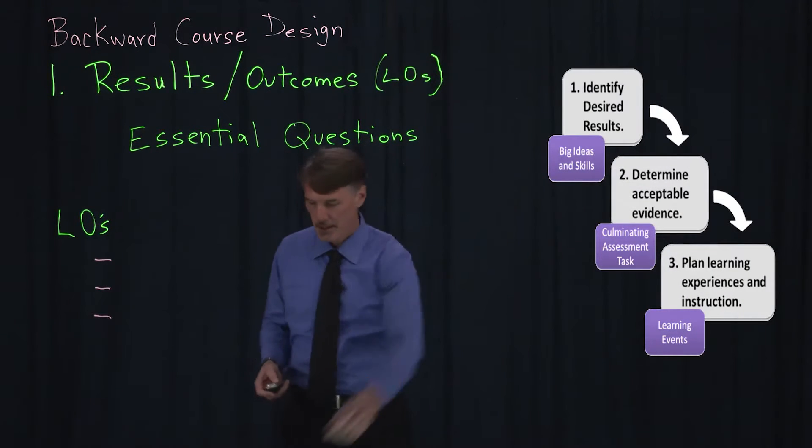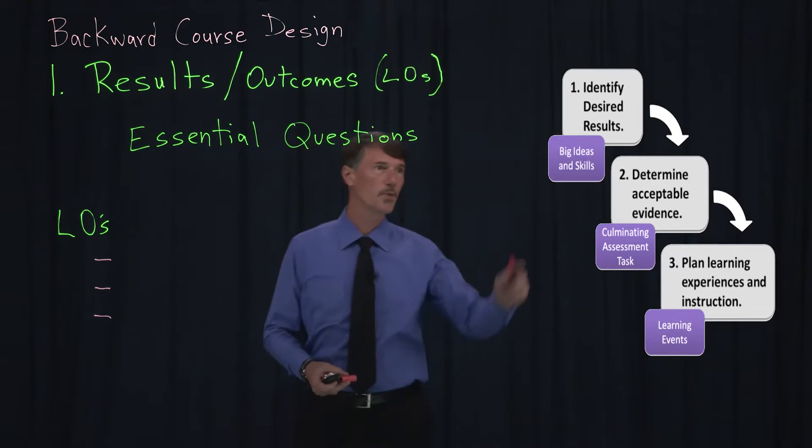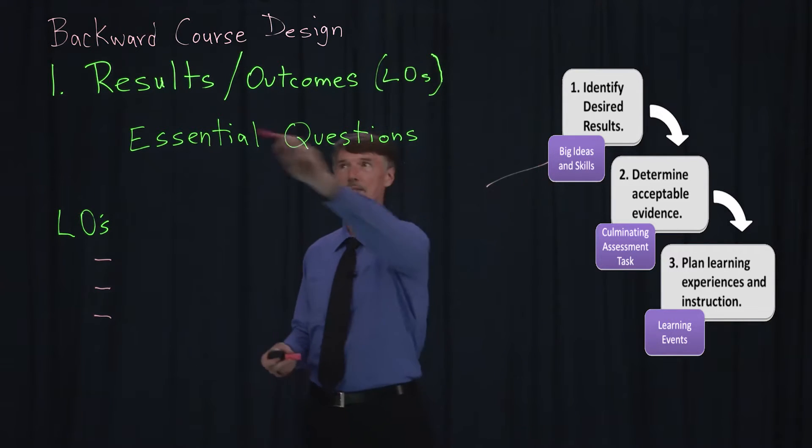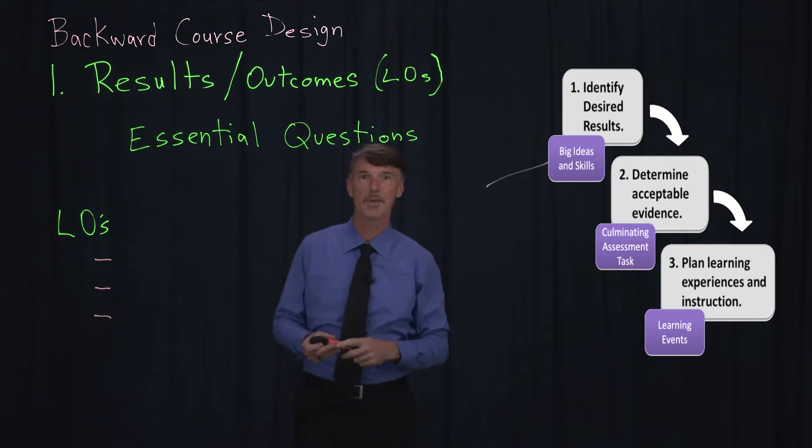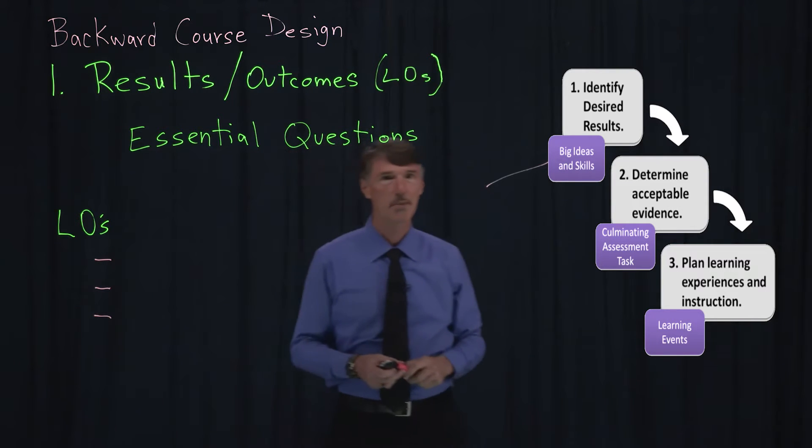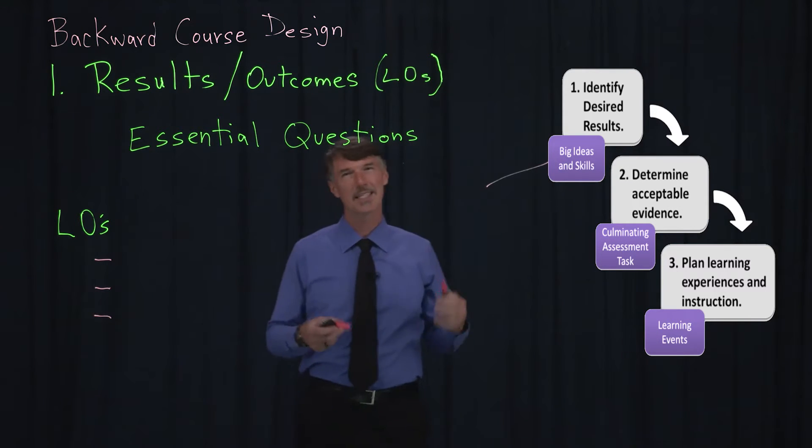So I mentioned the model. Here it is. This is the model that we're going to be seeing over and over again. And we're going to talk about step number one, which is the results and the outcomes. Now for this to address step number one, we have to worry and think about these essential questions.